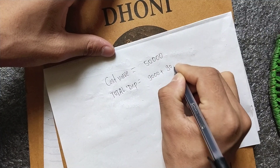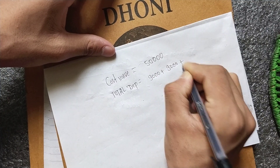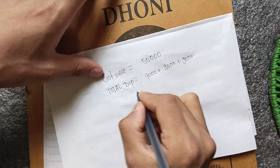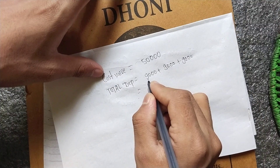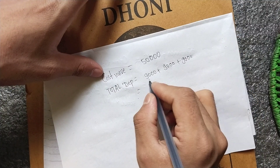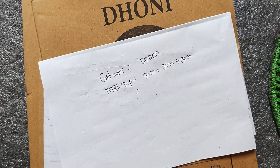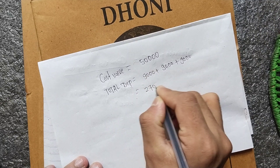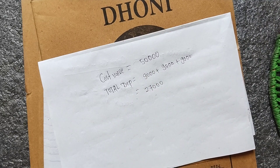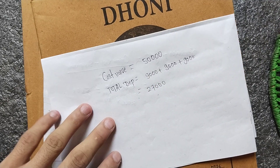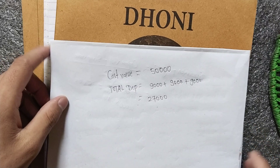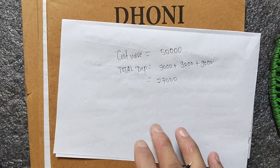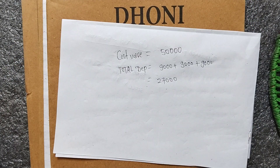Total depreciation: 9,000 plus 9,000 plus 9,000 equals 27,000. The book value is therefore 50,000 minus 27,000, which gives us 23,000.